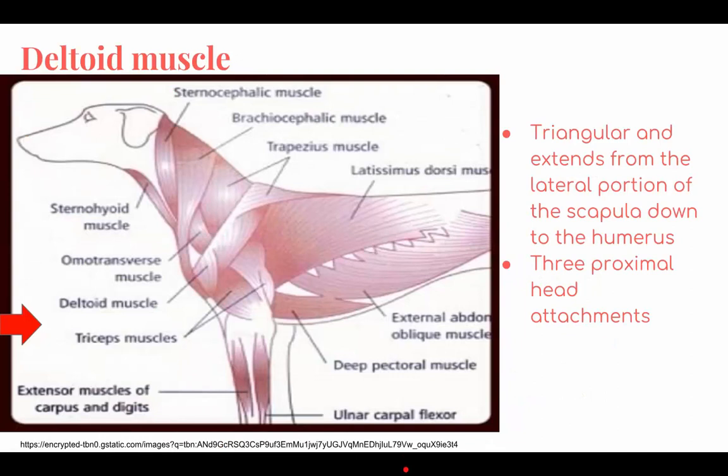Deltoid muscle. It is triangular and extends from the lateral portion of the scapula down to the humerus. Its function is to act as an abductor muscle and flex the shoulder joint.